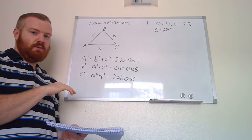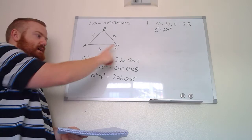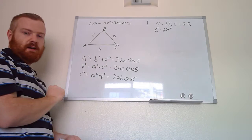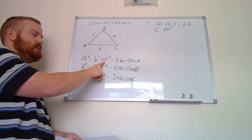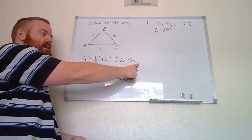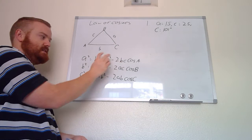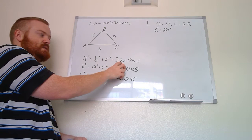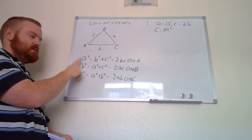Go ahead and write these down — pause the video if needed. Essentially, the side length on the left side has to match the angle on the right side. For the first version: a² = b² + c² − 2bc·cos(A). Side a matches angle A, and the other two values are just the other two side lengths — you square them, add them together, then subtract two times those side lengths multiplied by the cosine of the angle.